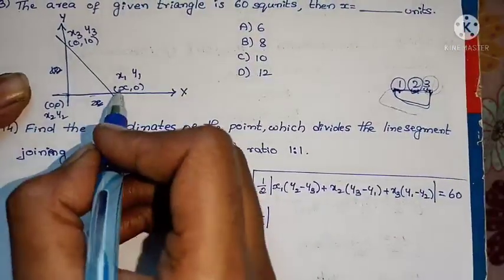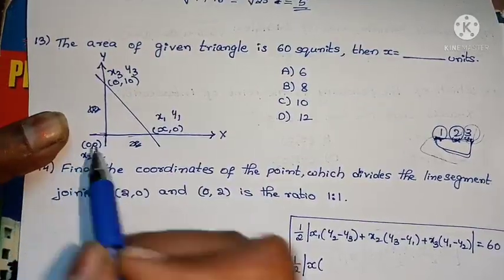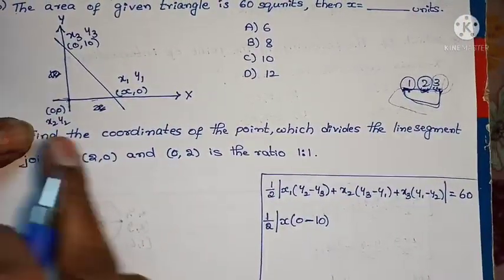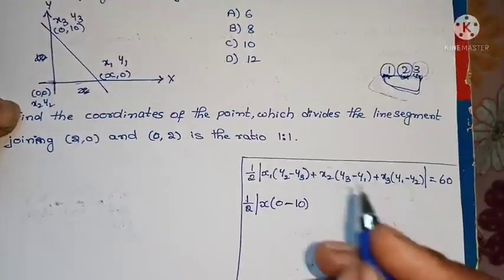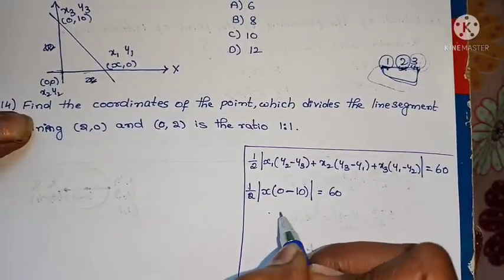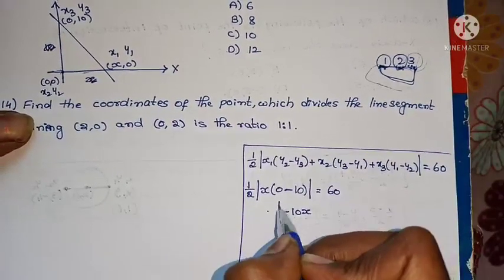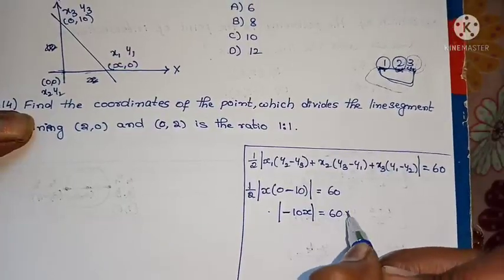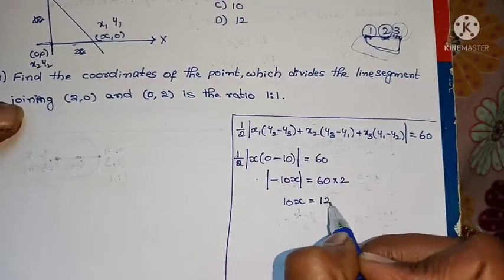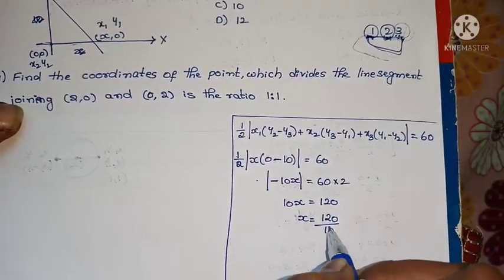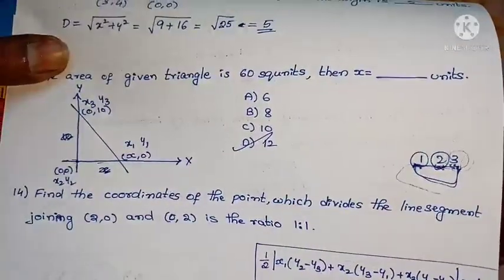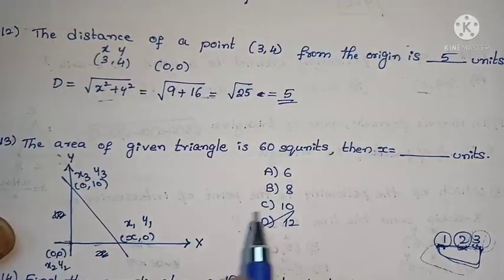This is x1, y1; this is x2, y2; this is x3, y3. Now: half mod of x1, which is x, times (y2 which is 0, minus y3 which is 10) plus x2 which is 0 (anything times 0 is 0) plus x3 which is 0 (anything times 0 is 0) equals 60. So x times (0 minus 10) gives -10x in the mod. Half of mod(-10x) = 60. Multiply by 2: 10x = 120. x equals 120/10, cancel zeros: x equals 12. Therefore x equals 12. That's the answer, option D.